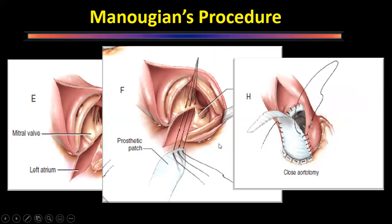Complications of the Nicks and Manouguian procedures include: risk of mitral regurgitation developing later, the procedures cannot be carried out if there is pre-existing mitral regurgitation, difficulty if the annulus is heavily calcified, and chances of post-operative heart block developing.